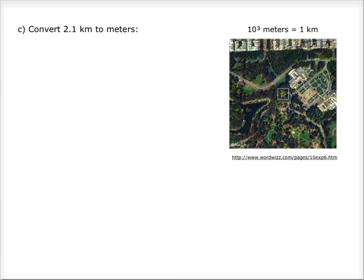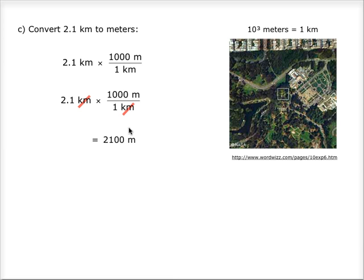Part c: convert 2.1 kilometers to meters. You know that there are 1,000 meters in 1 kilometer. So if you times 2.1 kilometers by 1,000 meters and divide by kilometers, the kilometers cancel out and you are left with meters. Remember to change it to the right number of significant figures — there are 2. Therefore, your answer must have 2 significant figures: 2.1 times 10 to the 3 meters.